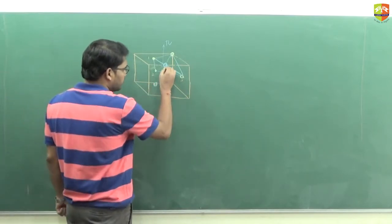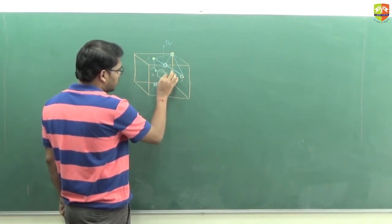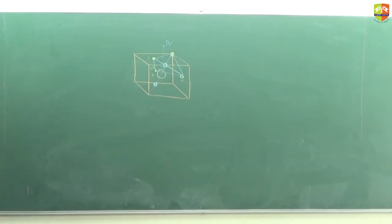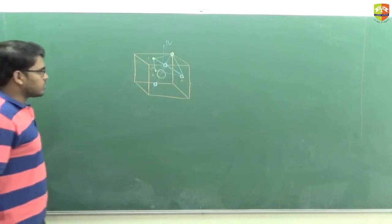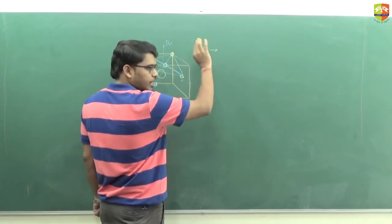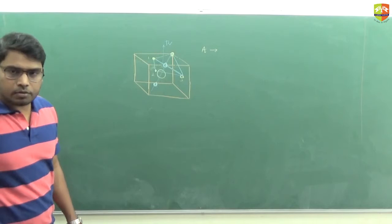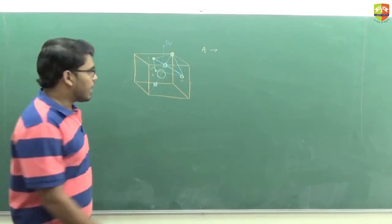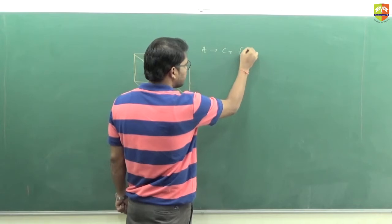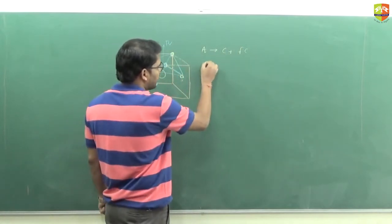On a body diagonal we have two tetrahedral voids, and at the center we have a centrified octahedral void. So what is the question? Atom A forms CCP lattice points. CCP means FCC — same thing. So A is present at corners plus face centers. B and C are present at alternate tetrahedral voids, meaning on one diagonal we have B at one void and C at the other void.